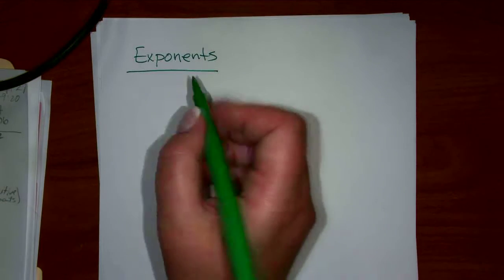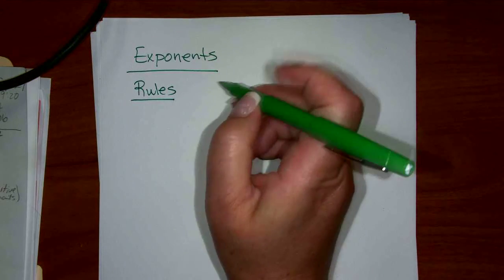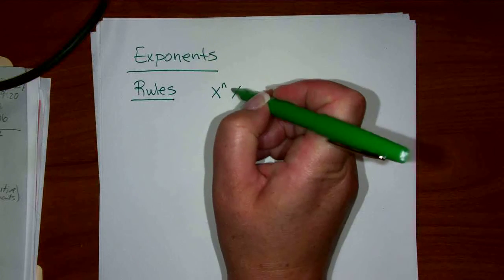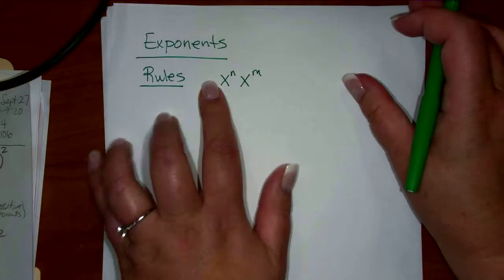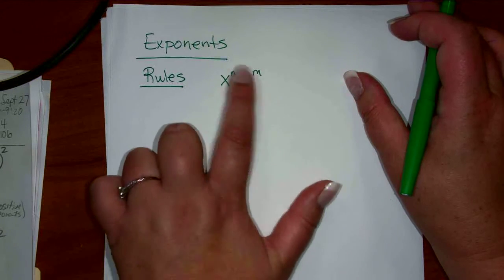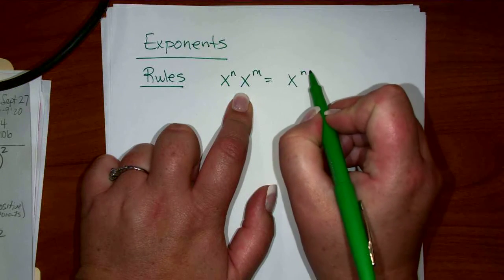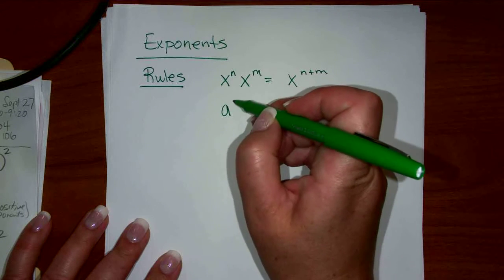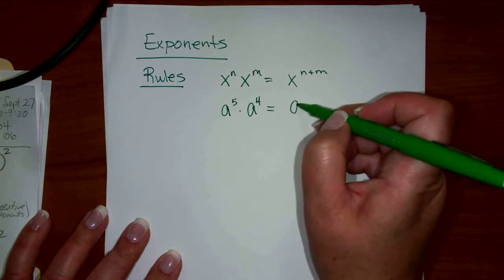So the rules of exponents are these. If the base is the same — so the x is the same — to put these together you can add the exponents. So if we had a to the 5 times a to the 4, that would be a to the 9.